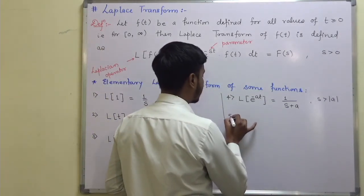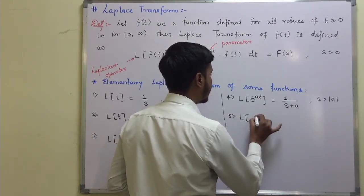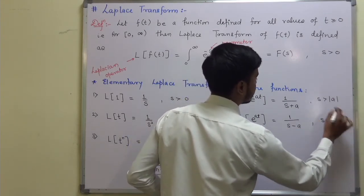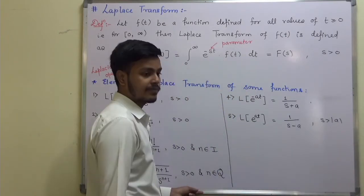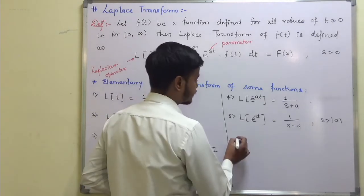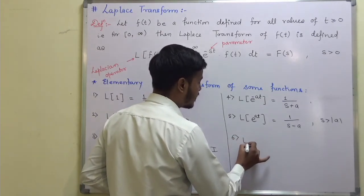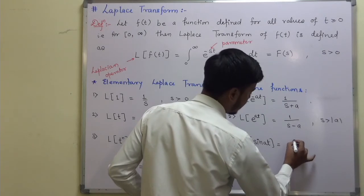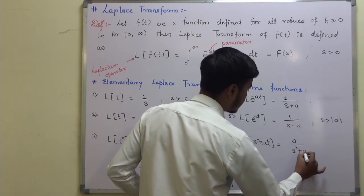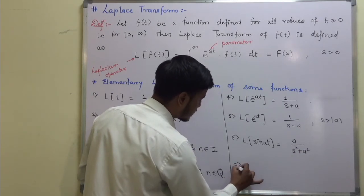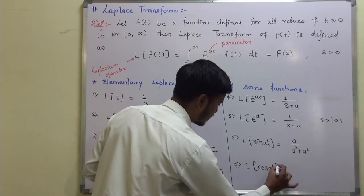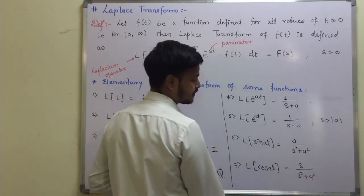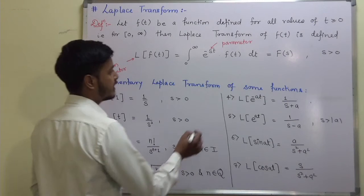Next, the Laplace transform of e^(at) is 1/(s−a). Then, the Laplace transform of sin(at) is a/(s²+a²). Number seven: the Laplace transform of cos(at) is s/(s²+a²).